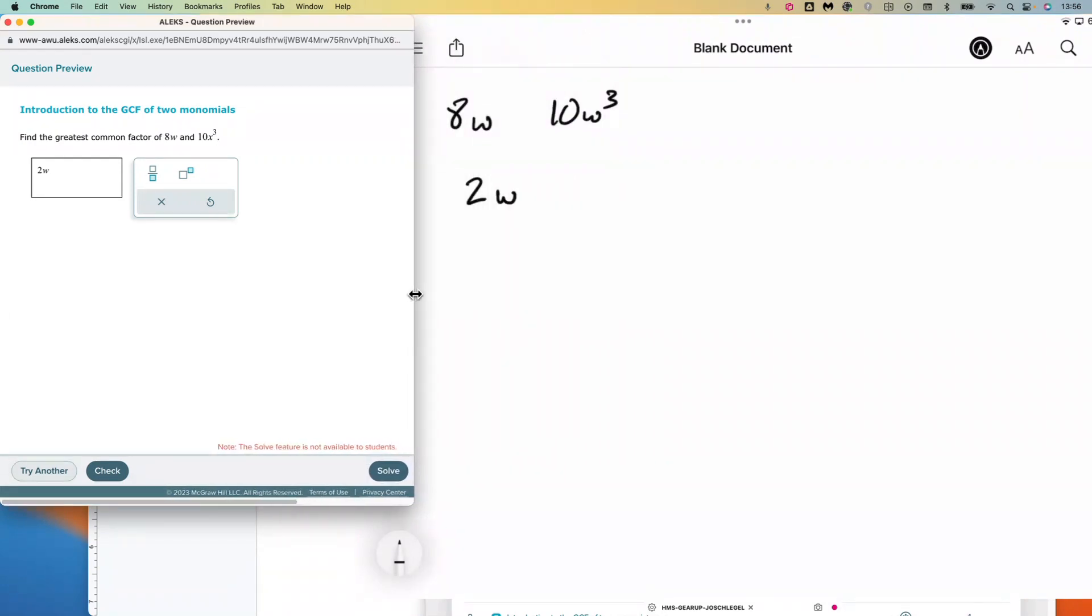Again, because 2 is the largest number that goes into both of them, and the highest order on the w—here's a w to the 1 and a w to the 3—the largest one there is w to the first power.